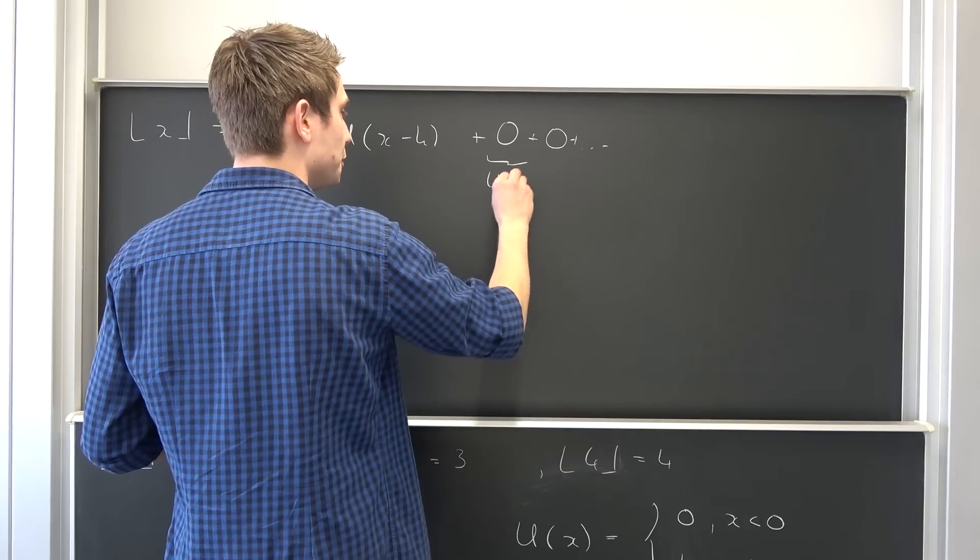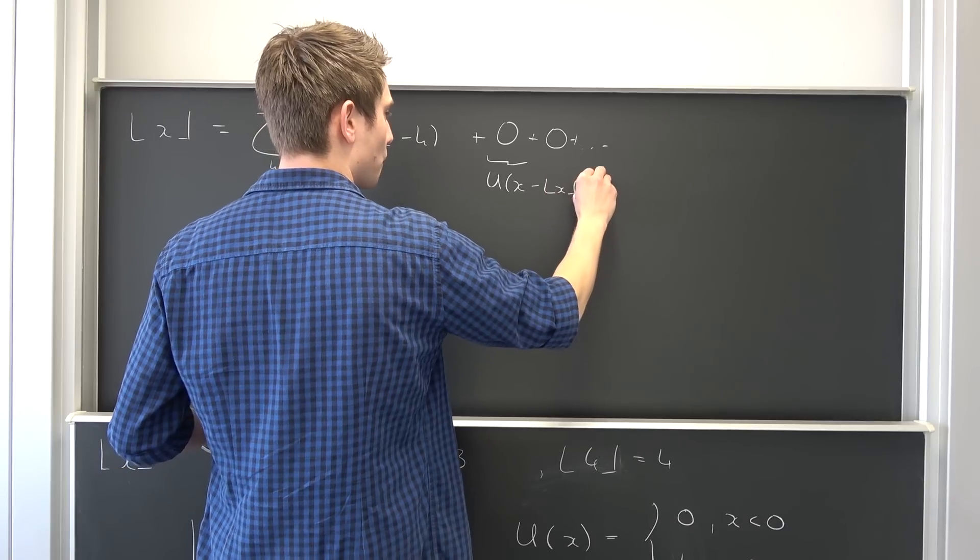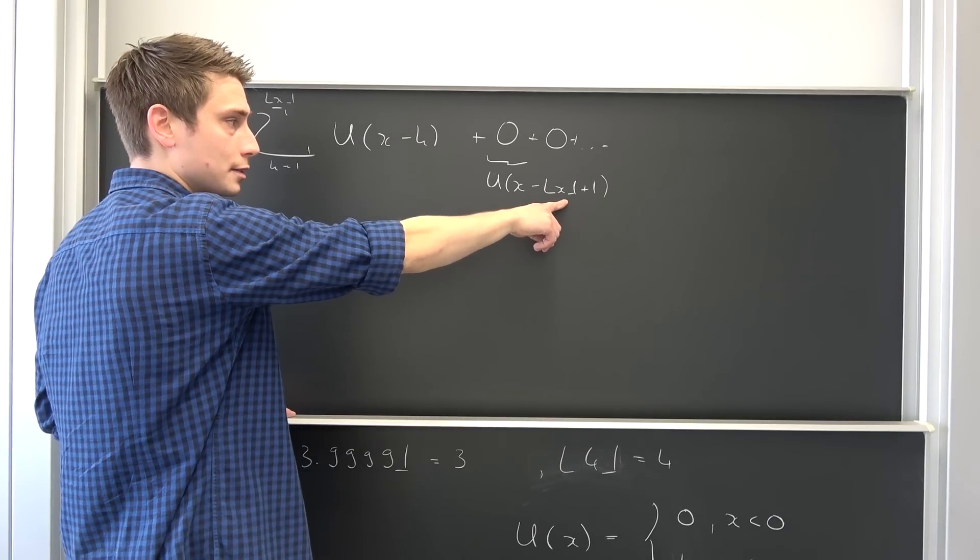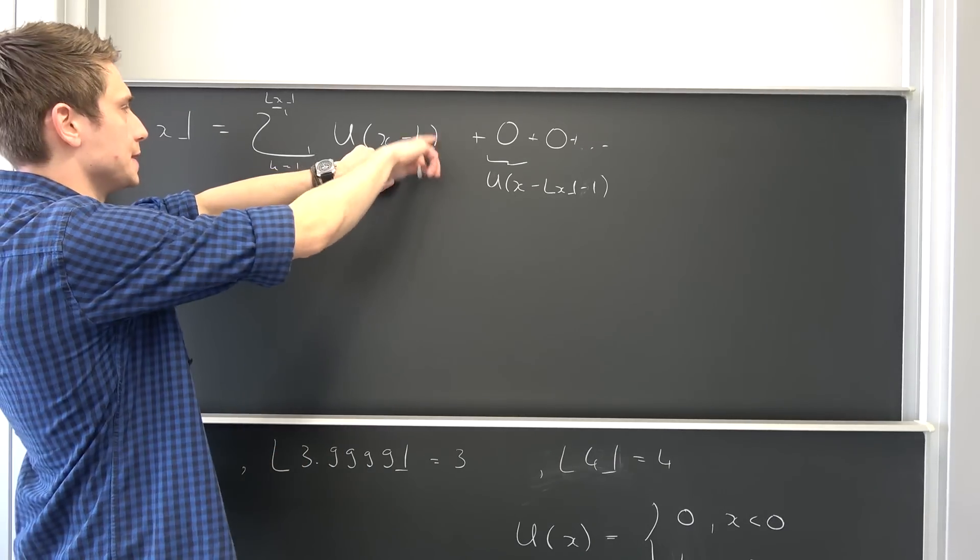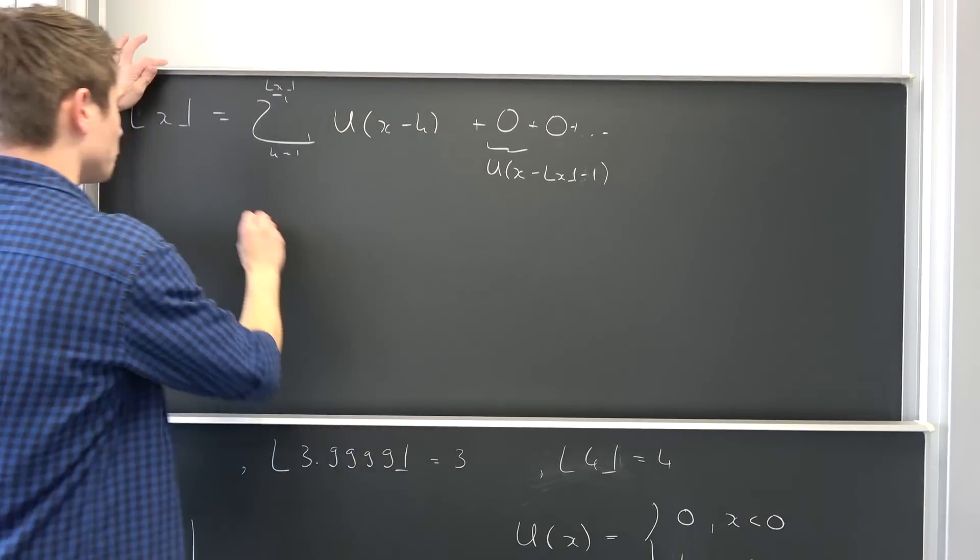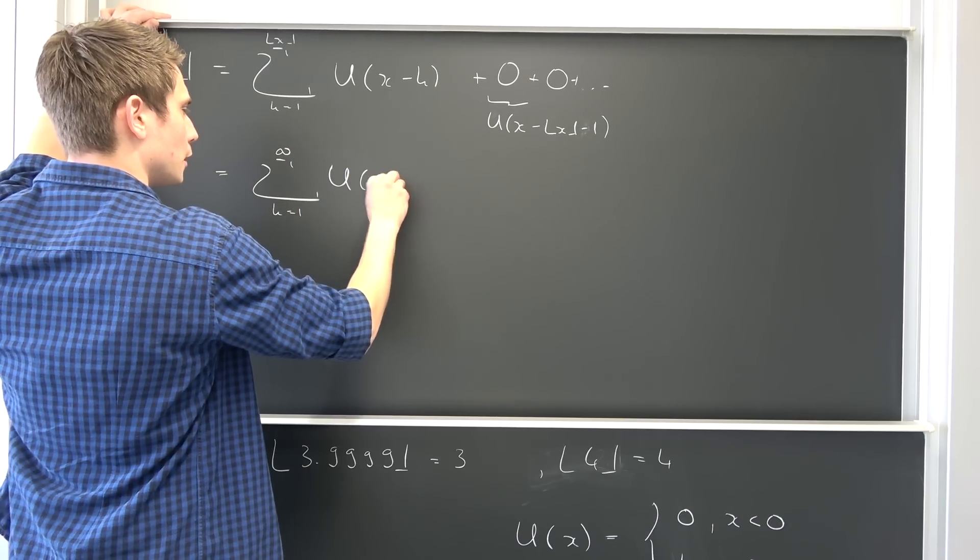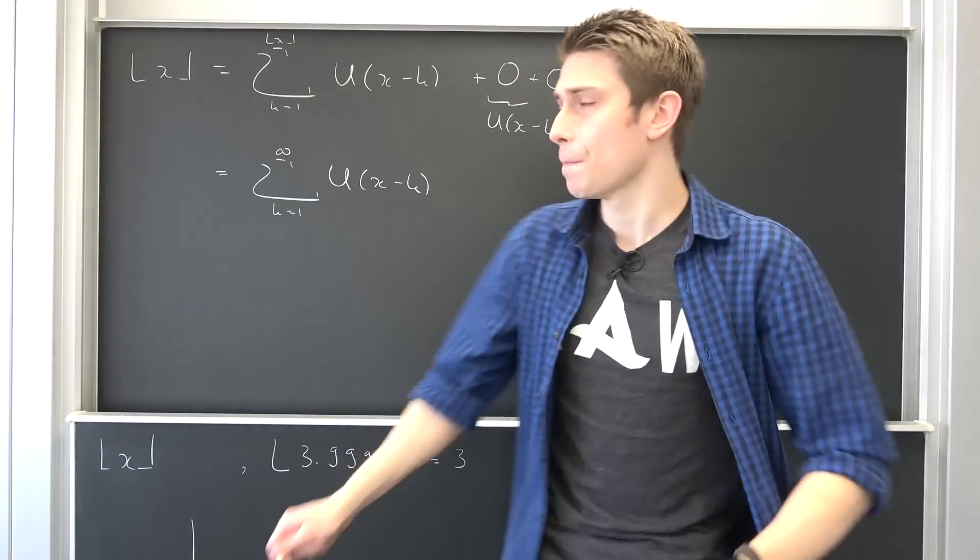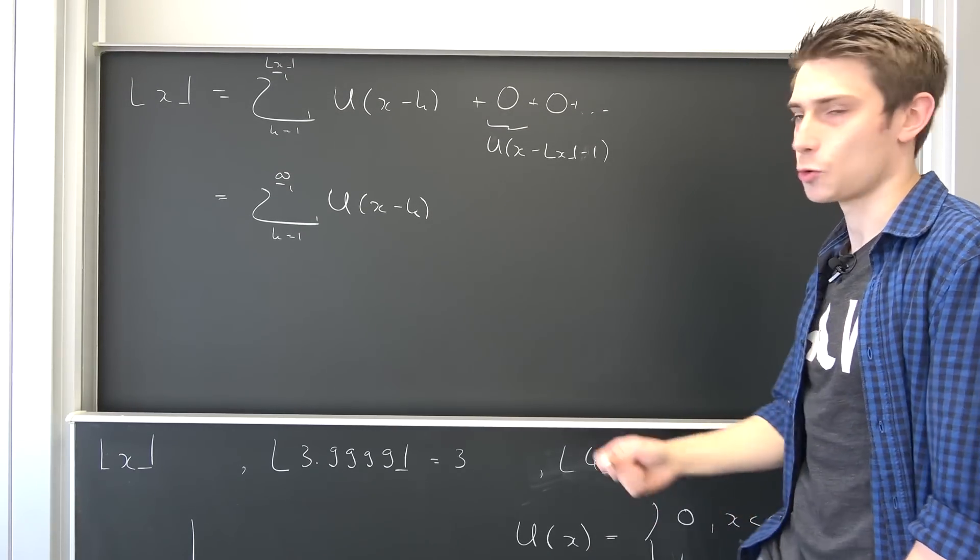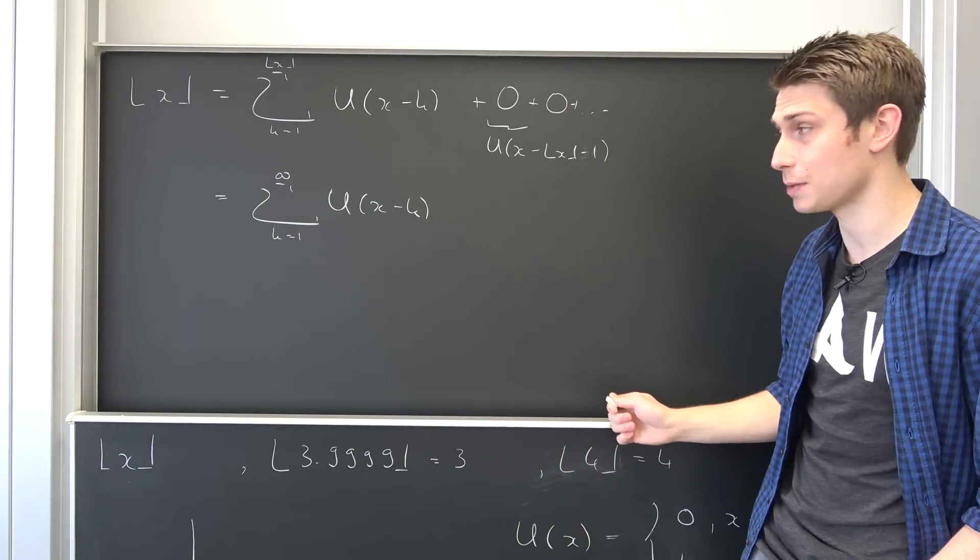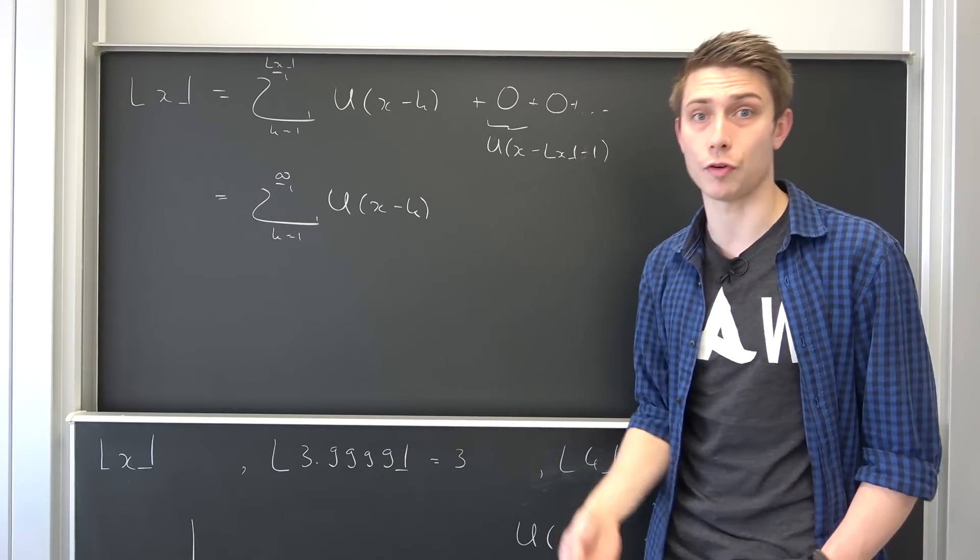Meaning this is for example u of x minus floor of x plus 1. You see? If you plug this into here, k being equal to floor of x plus 1, and so on we can go on with this. And we can turn this into a series running from 1 to infinity of u of x minus k. I hope this did make perfect sense to you guys. It's quite a weird representation of our floor function, but it does work out for the positive reals. And this right here is really quite useful if you want to evaluate floor functions in itself.